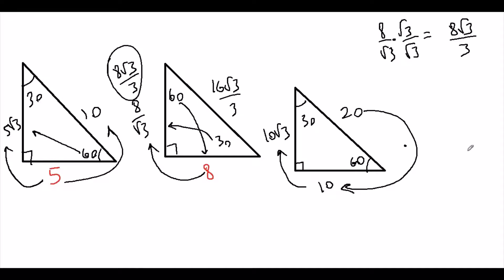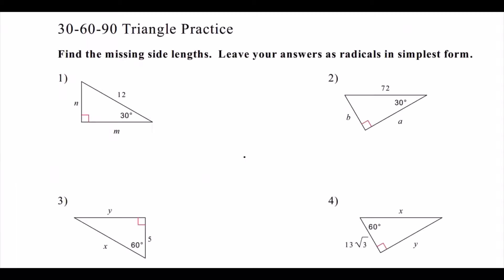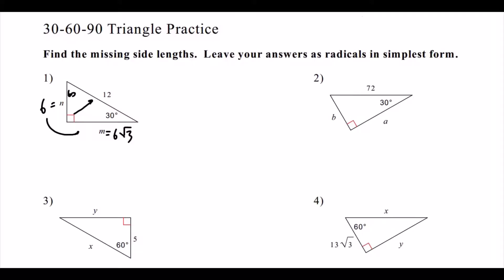Now let's look at real SAT-style problems. Problem 1: given the hypotenuse (across 90°), across 30° is half of it, which is 6, and across 60° is 6√3. Problem 2: given hypotenuse, across 30° is half of 72, which is 36, and across 60° is 36√3.